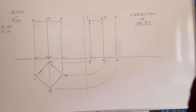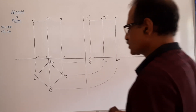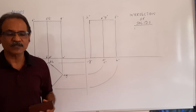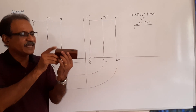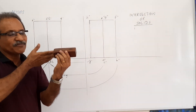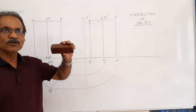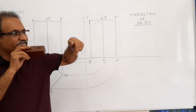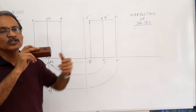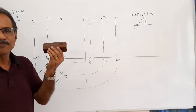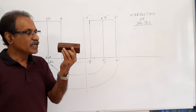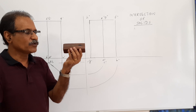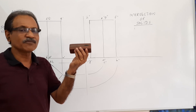This vertical prism is penetrated by another horizontal prism. The penetrating prism has all lateral faces equally inclined to HP, and its axis is parallel to both planes. It penetrates the vertical prism so that the axis of the horizontal prism cuts the axis of the vertical prism.